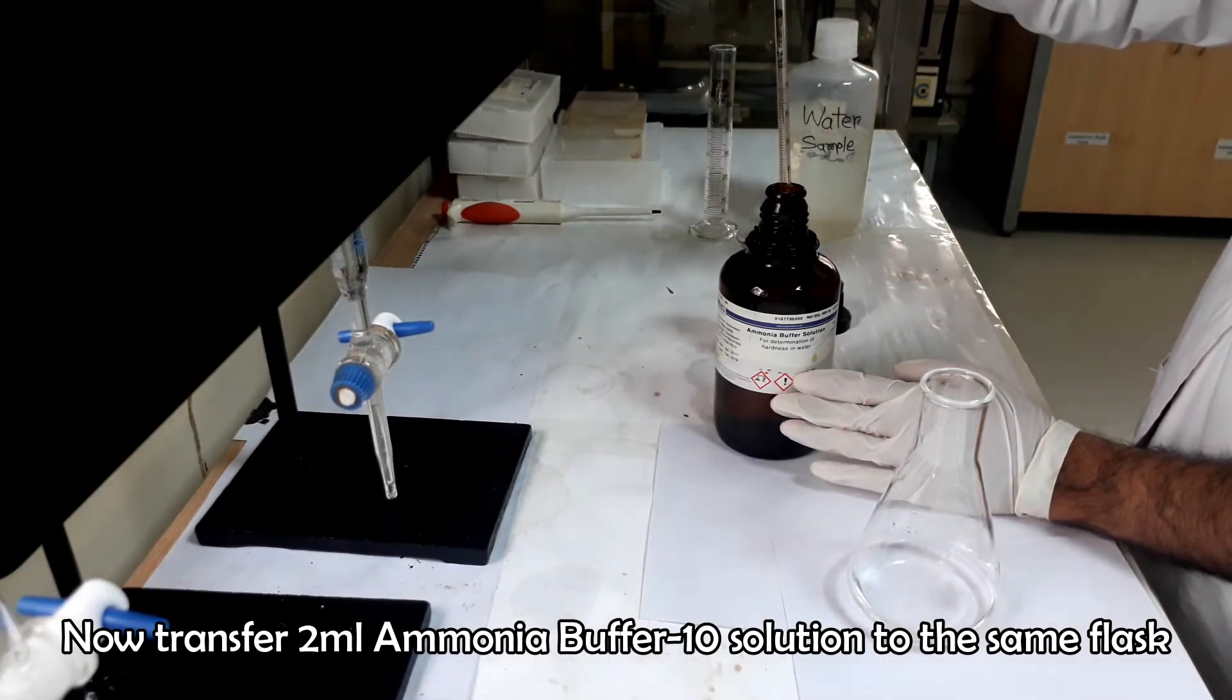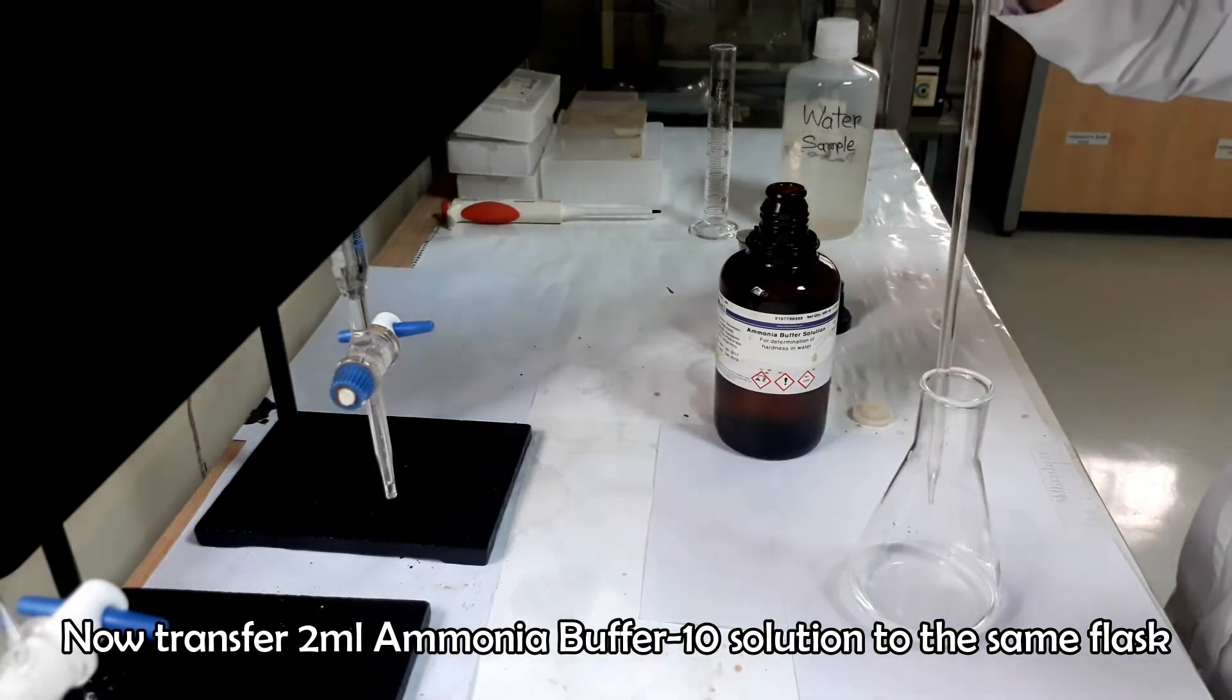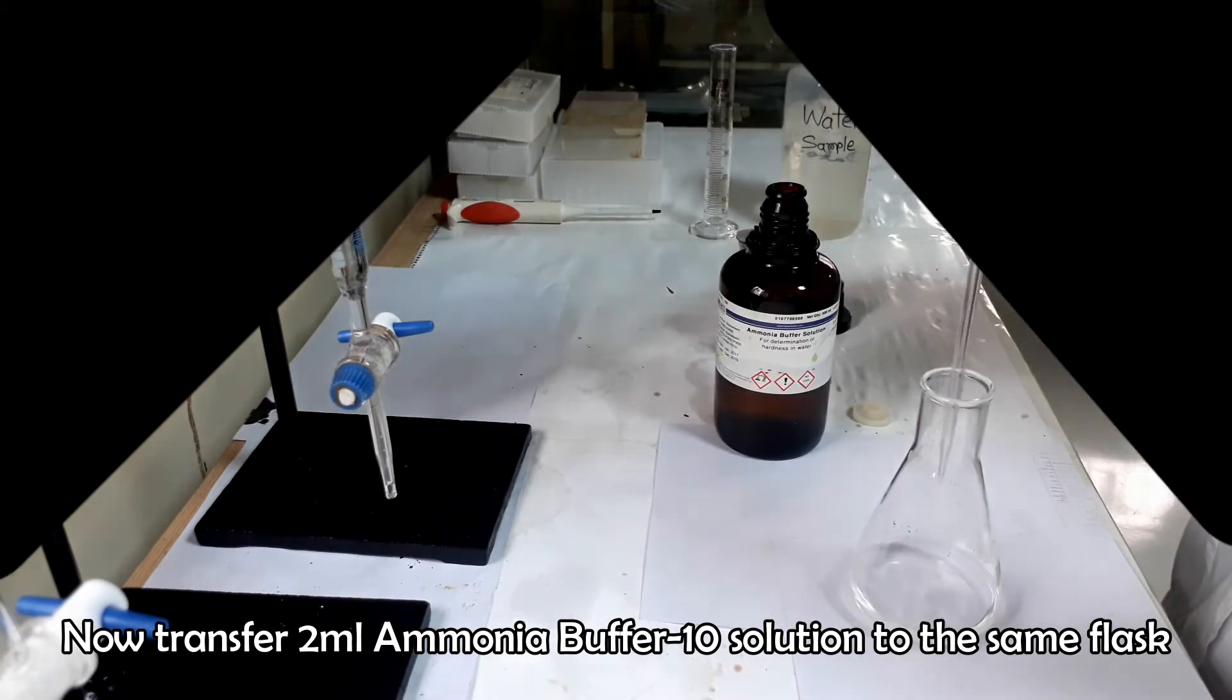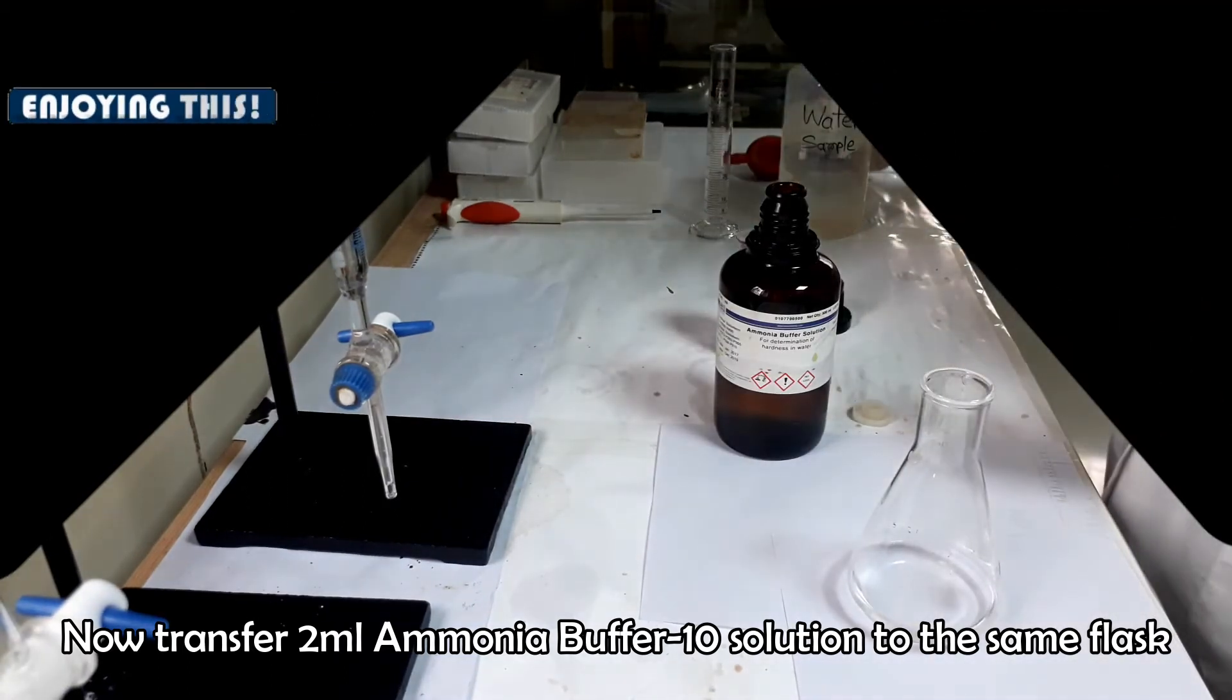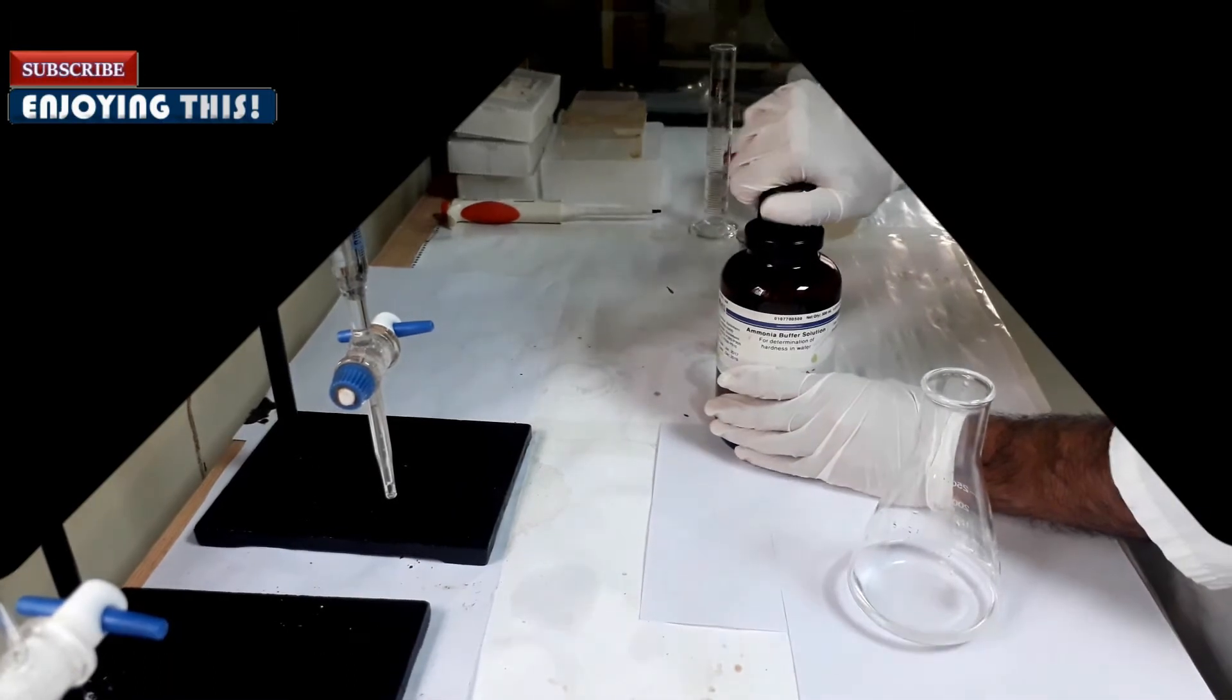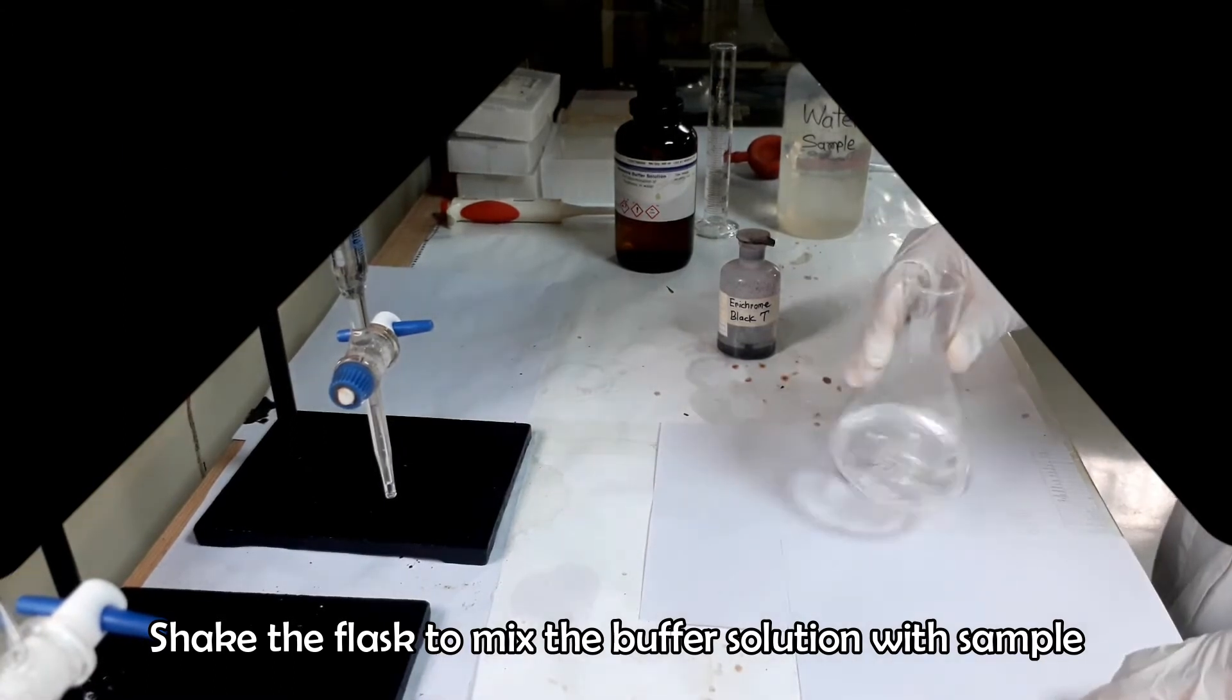Add 2 ml of ammonia buffer tense solution. Rotate the flask to mix the water sample with ammonia buffer solution.